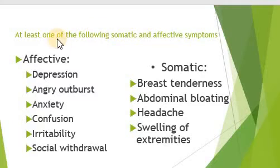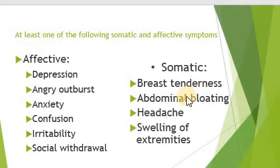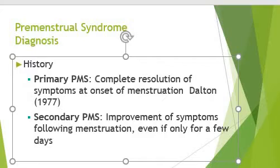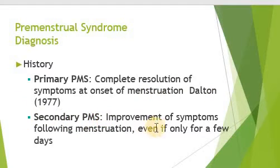We can differentiate symptoms into two categories: affective and somatic. In the affective category there may be depression, anger, anxiety, or confusion, while in the somatic category there will be changes in physical characteristics. Primary premenstrual syndrome is completely resolved when menstruation begins, while secondary premenstrual syndrome shows improvement of symptoms following a few days of menstruation.